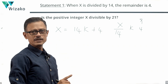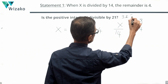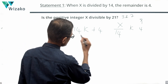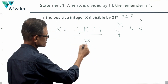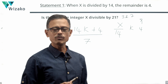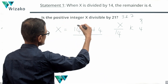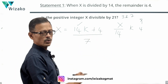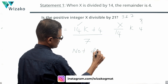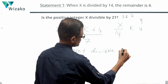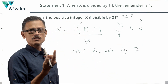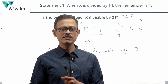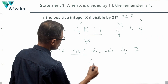For 14k + 4 to be divisible by 21, it must be divisible by 7. Now, 14 is divisible by 7, so any multiple of 14 — that is, 14k — is divisible by 7. However, 4 is not divisible by 7, which means 14k + 4 is not divisible by 7. Therefore, x is not divisible by 7, and if x is not divisible by 7, it cannot be divisible by 21.